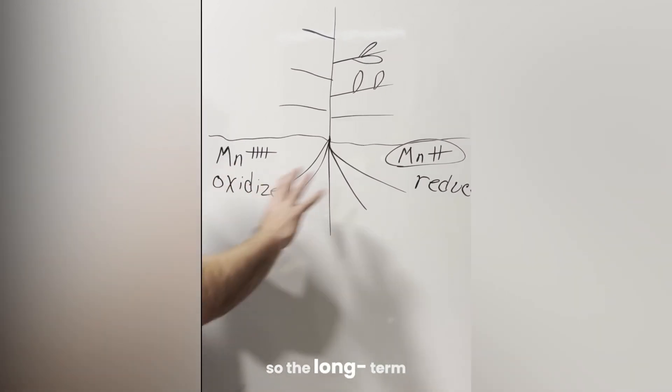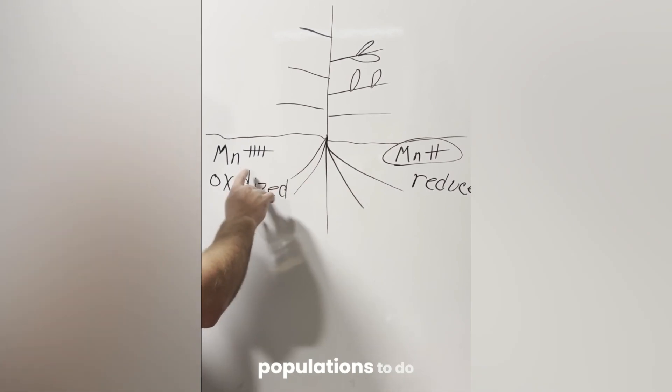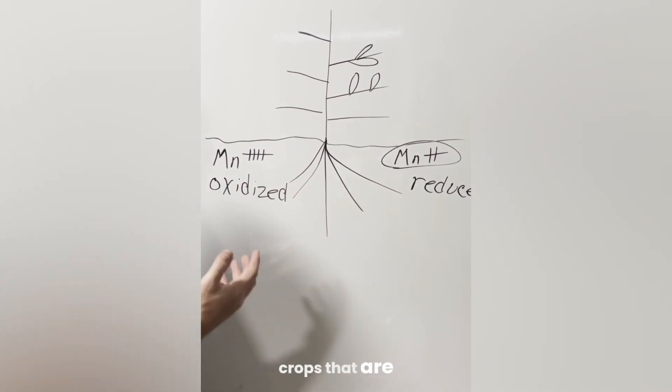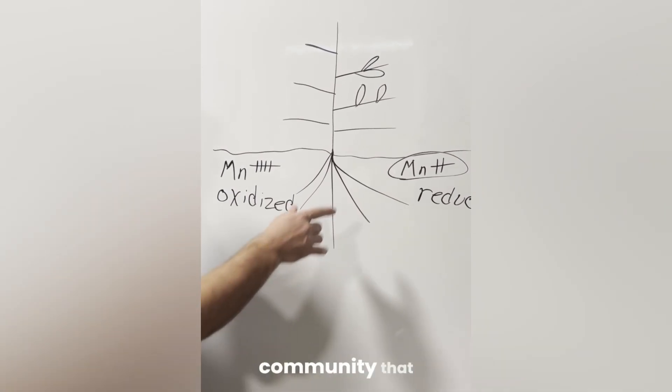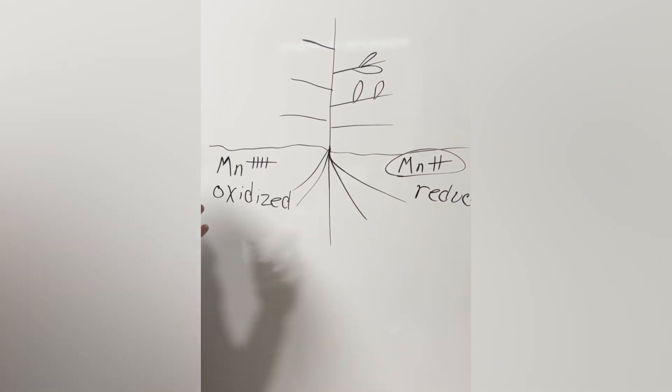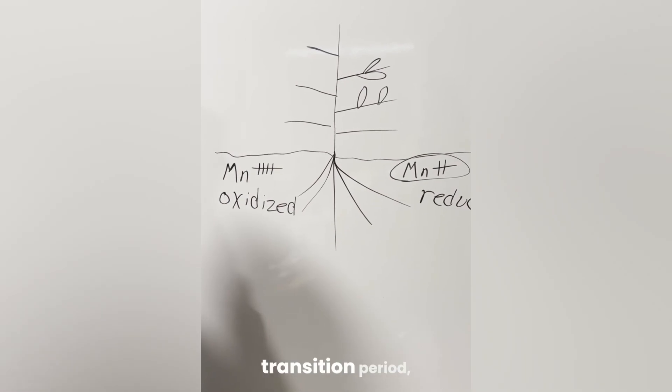So in order to get manganese, the long-term solution is to build soil microbial populations to do this conversion process. There are some cover crops that are colonized and have a very strong reducing soil microbial community that really enhance this process. But in the short-term fix for current growing season and during the initial stages of a transition period